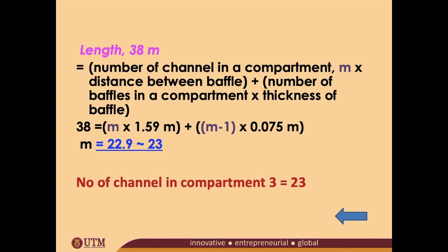Therefore, the number of channels in compartment 3 is 23. Because we have wider spacing, that means we're going to have less number of channels in compartment 3, just like the pictures that I showed you at the earlier part of this lecture. Okay, with that we have completed flocculation.